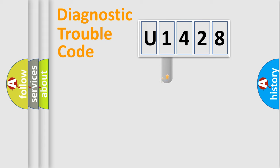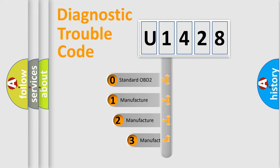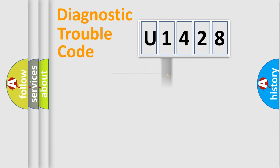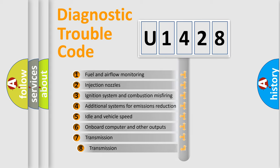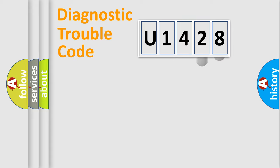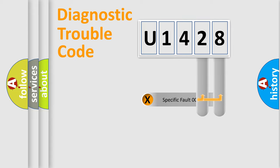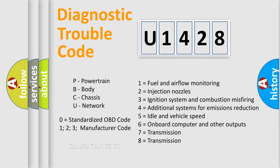This distribution is defined in the first character of the code. If the second character is expressed as zero, it is a standardized error. In the case of numbers 1, 2, or 3, it is a more specific expression of a car-specific error. The third character specifies a subset of errors. Only the last two characters define the specific fault of the group, and this division is valid only if the second character is zero.